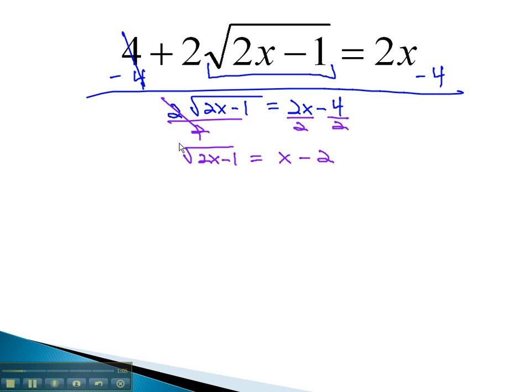Now, we have the square root completely alone, and we can get rid of it by doing the inverse, or an exponent on both sides. The opposite of a second root is a second power, leaving just 2x minus 1 equals. When we square the binomial, we get x squared. Negative 2x and negative 2x is negative 4x, and then negative 2 squared is positive 4.